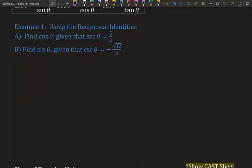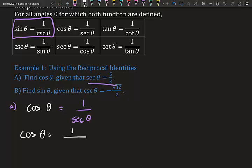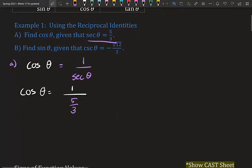Let's find cosine θ given that secant θ is 5/3. We'll do this the long way first and then the easy way. For part a, we need to find cosine θ. We know cosine θ equals one over secant θ. So we plug in our secant θ: cosine θ equals one over secant θ, and our secant is 5/3.